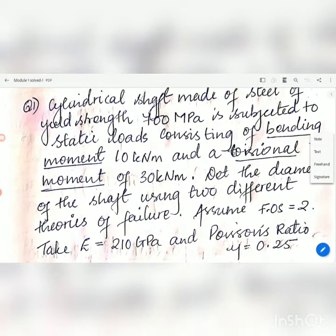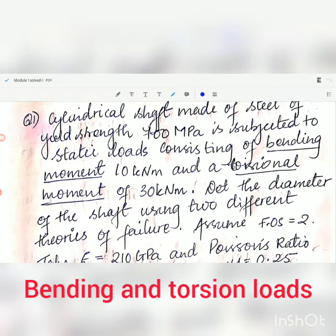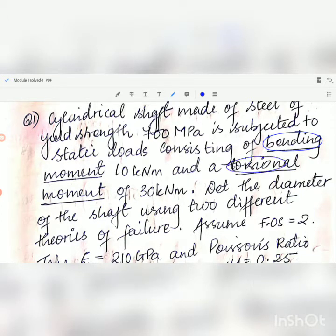Take E equal to 210 GPa and Poisson ratio mu equal to 0.25. Here we should understand that there are two loadings, bending as well as torsion, and both loads are static. They are 10 kNm and 30 kNm each. In such cases we have to apply theories of failure which are given in the data book page number 21.